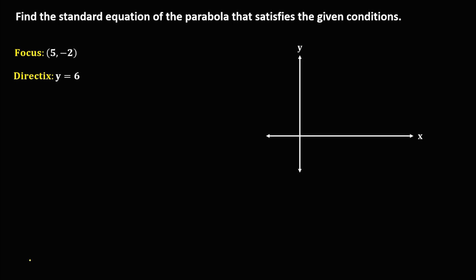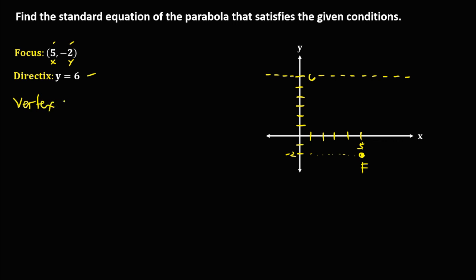First we need to graph this parabola. Using the given, from the focus, x is positive 5 and y is negative 2. So this is now the coordinate of the focus. For the equation of the directrix, y equals positive 6. So this is now the equation of the directrix.